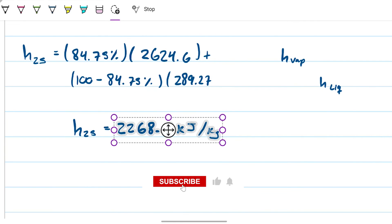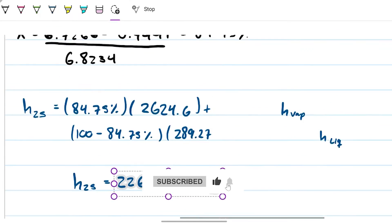2268.5, units has to be the same obviously. So this is kilojoules per kilogram. And now that I have this number, I'm going to copy this and now I can go back to...